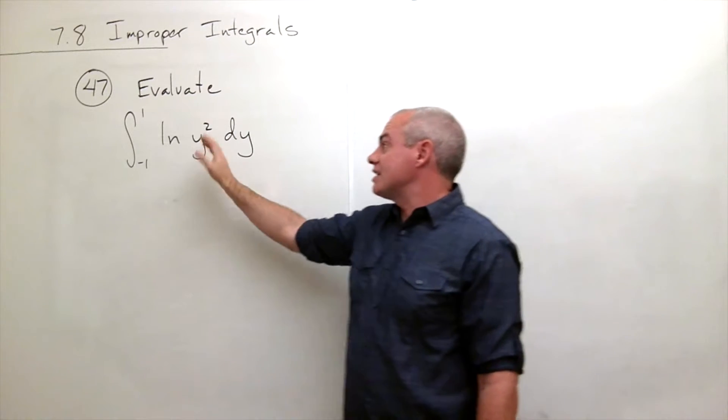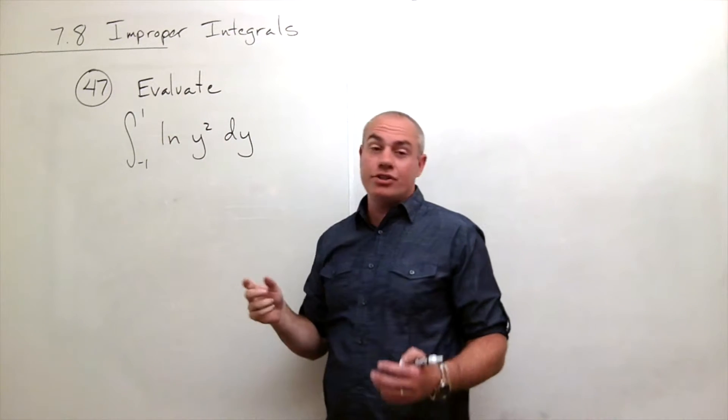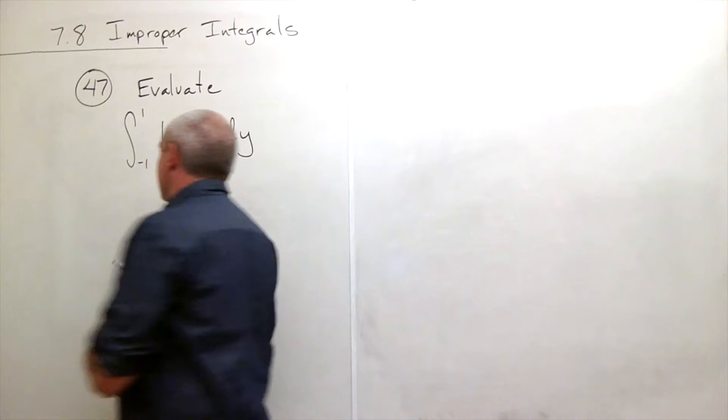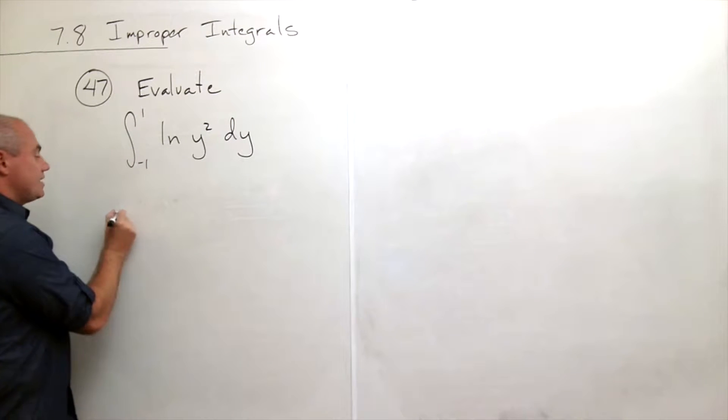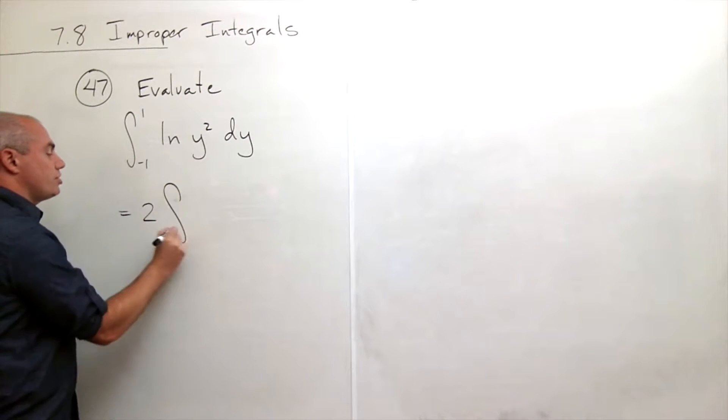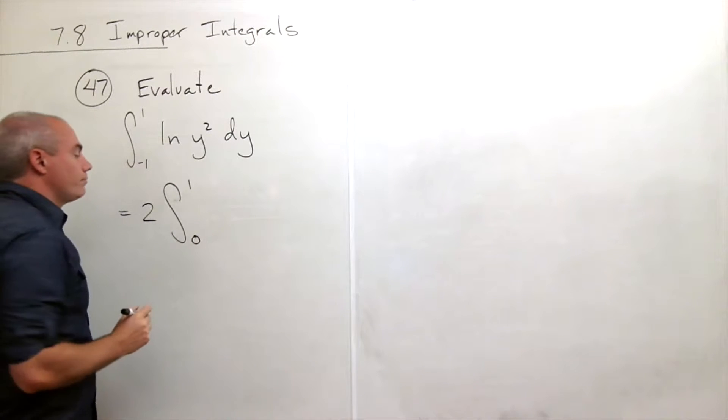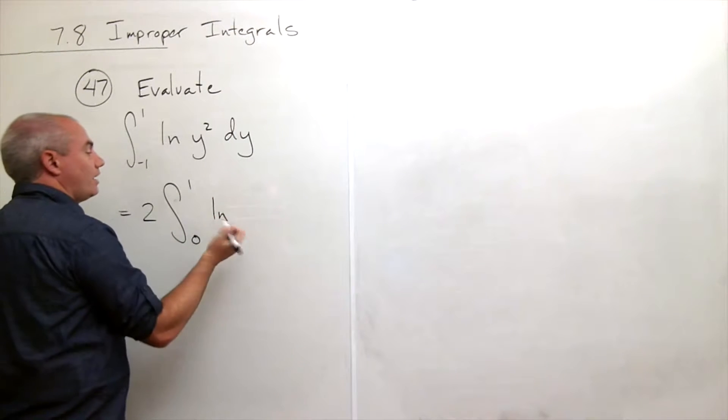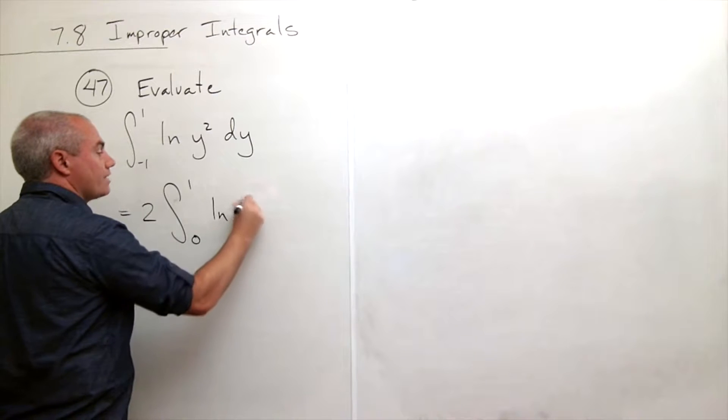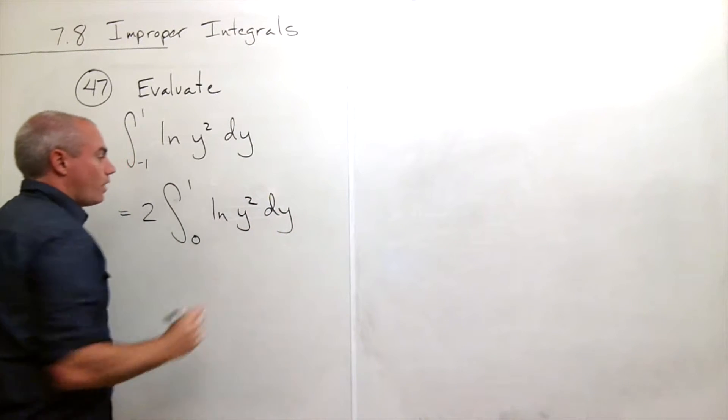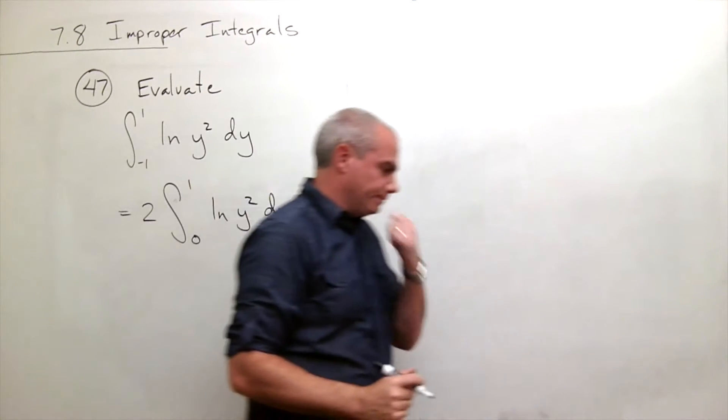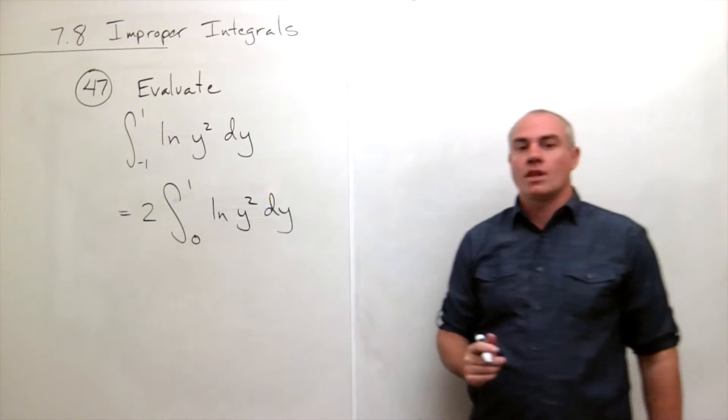Now, since this is kind of an even function, what I could do is I could rewrite it. Since I see that it's symmetric, I could write it as just 2 times the integral from 0 to 1 of ln of y² dy.